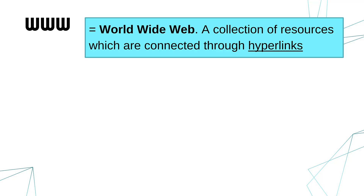The World Wide Web is a collection of resources which are connected through hyperlinks. The entire World Wide Web contains billions if not trillions of individual resources. By resources I mean really software — in most cases, web pages. You write web pages in something like HTML and put them on a web server. The hyperlinks are the links you click to move between web pages.